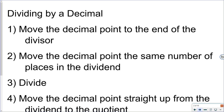Just like when we were multiplying decimals and earlier when we were dividing fractions, there are some steps we need to follow. When we divide by a decimal, we're going to move the decimal point to the end of the divisor — the number on the outside — turning that divisor into a whole number. If we make a change to our divisor, we have to make the same change to our dividend, the number on the inside. So we move the decimal point the same number of places in the dividend: one place in the divisor means one place in the dividend, two places means two places, and so on.